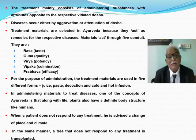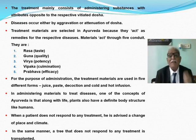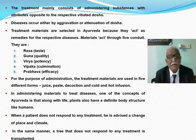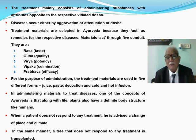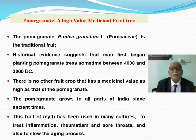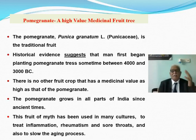One concept of Ayurveda is that plants also have a definite body structure like human beings. When a patient does not respond to treatment, he is advised a change in place and climate; similarly, a tree that does not respond to treatment is transplanted. The universally accepted principle that love and tender care are important in medical treatment is clearly reflected even for trees in the text of Vrikshayurveda. These are the basic concepts of Ayurveda, one of the oldest medicinal systems.